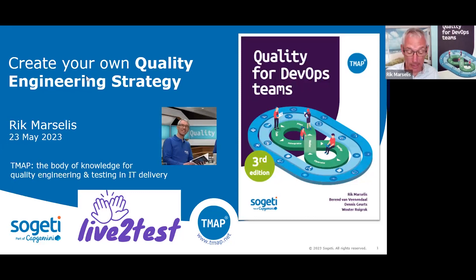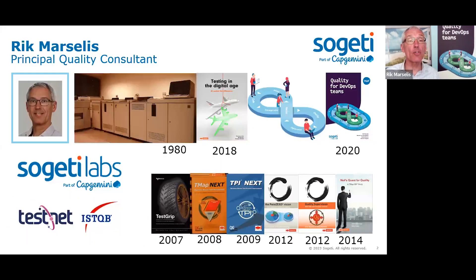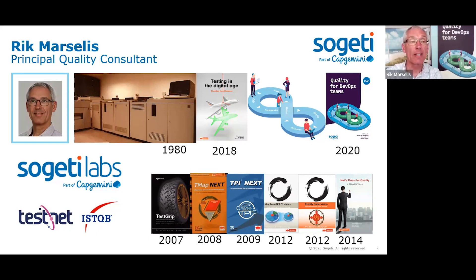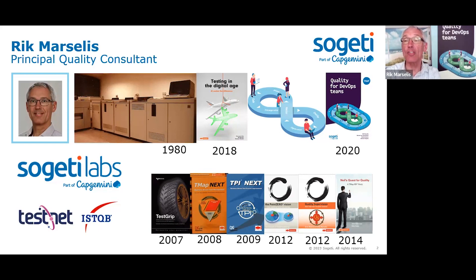We have a little over an hour. Let me quickly introduce myself. I'm principal quality consultant at Sogeti in the Netherlands, and I've been in IT for more than 40 years. The technological changes have been huge — when I started, computers looked very different — but the way we work together has changed much less. I used to be in an agile team in the 1980s, although back then we didn't know it would later be called an agile team.